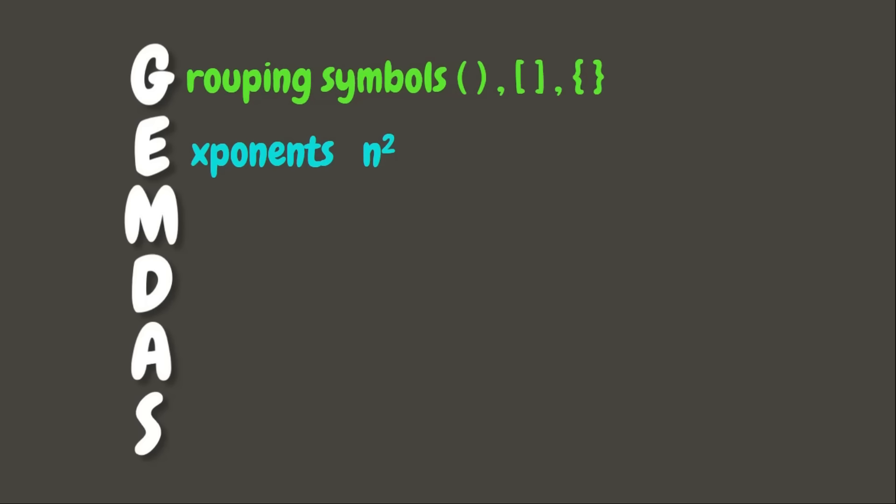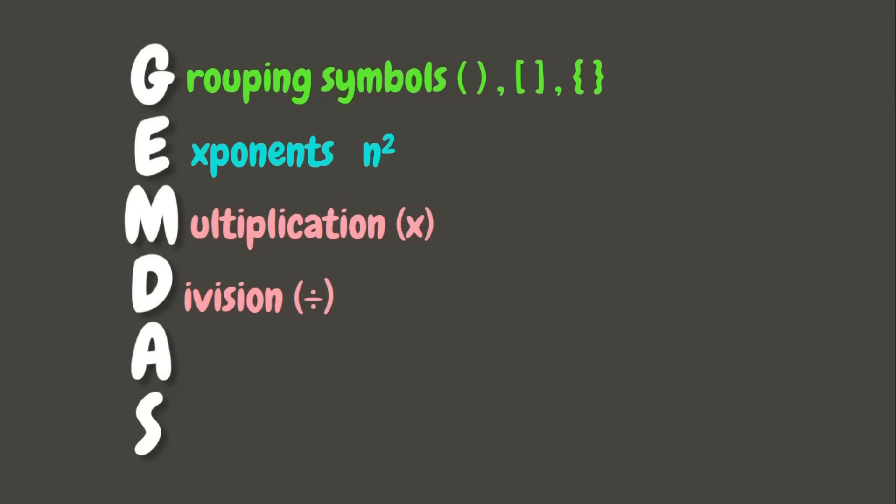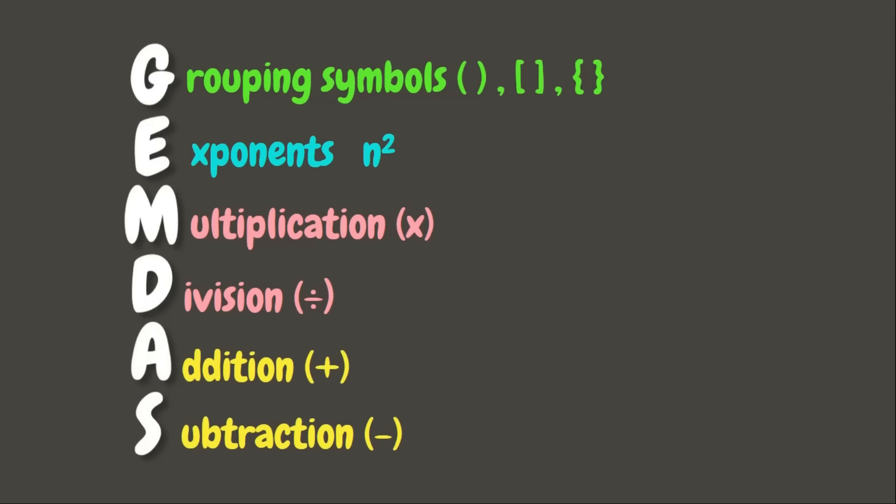The next rule is the letter E, which stands for Exponents. This means that we need to evaluate all numbers with exponents. After that, we need to multiply and divide — performing multiplication and division as they occur from left to right. If multiplication comes first before division, we multiply first.